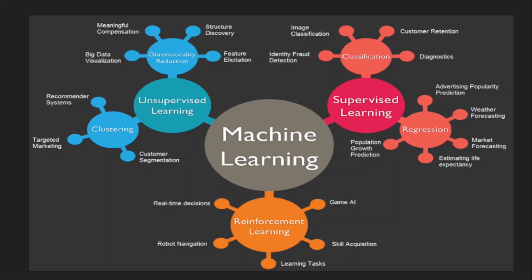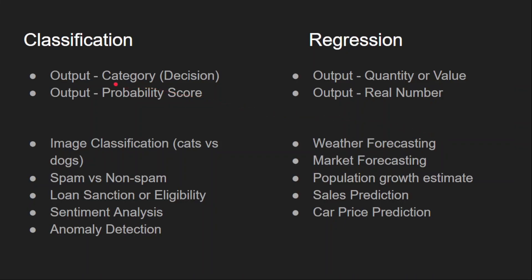Any real-world problem can be solved by one of several approaches in machine learning — you can take any problem and it will fit into one of these. We will restrict our discussion to supervised learning here. Most of the problems we can solve using either classification or regression tasks. In classification, the output is basically a decision — we need to decide on a category, and the actual network output will be a probability score.